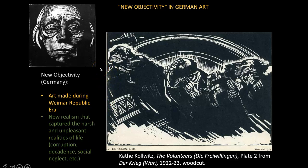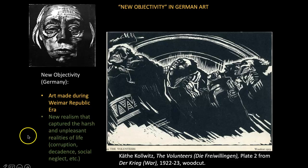Moving on to her style of art associated with New Objectivity in Germany — that was a style associated with art made during the Weimar Republic era, the era in between World Wars One and Two. It was a style of art that captured the harsh and unpleasant realities of life associated with those years: corruption, decadence, social neglect, etc. So she continued her printmaking in this era as well.